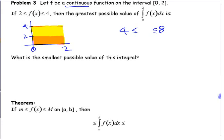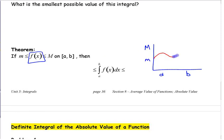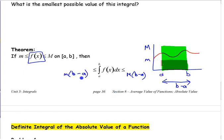The same question with variables: if a function on [a, b] always stays between little m and capital M, the highest the area could be is capital M times (b minus a) — that's the function sitting at the top. The lowest is little m times (b minus a). So the integral must satisfy: m times (b minus a) is less than or equal to the integral, which is less than or equal to M times (b minus a).